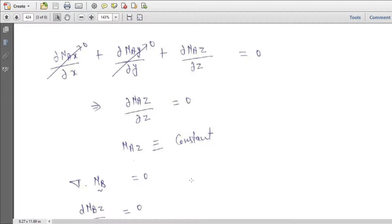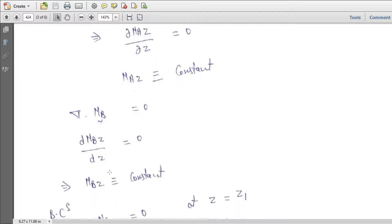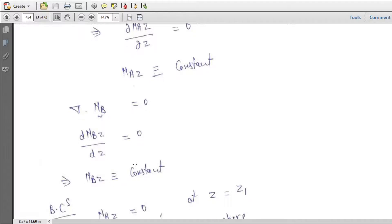So del NA equal to zero, del NB equal to zero. Now NA expression is given: del NAX upon del X, del NAY upon del Y, del NAZ upon del Z equal to zero. From here del NAZ del Z equal to zero. Integration of that, NAZ equal to constant. Similarly for del NB equal to zero, so del NBZ equal to zero, and finally del NBZ also a constant.